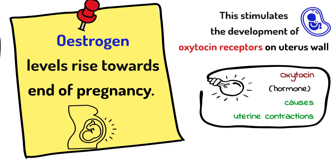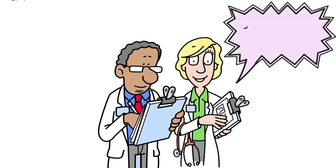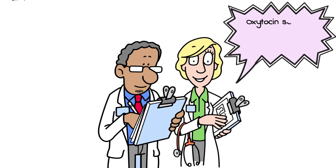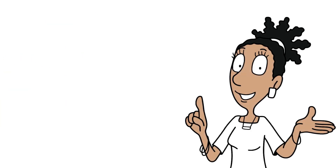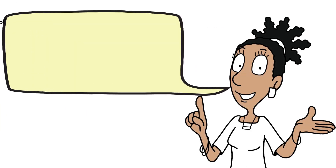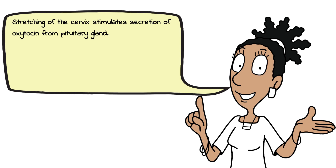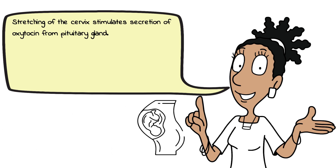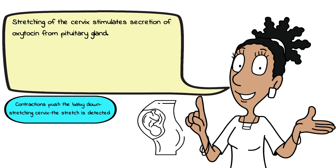Oxytocin is this very important hormone that causes the uterus wall to contract or squeeze to push the baby out, and oxytocin secretion increases as labour progresses. As labour progresses more and more oxytocin is secreted, because it's the stretching of the cervix that stimulates the secretion of oxytocin from the pituitary gland.